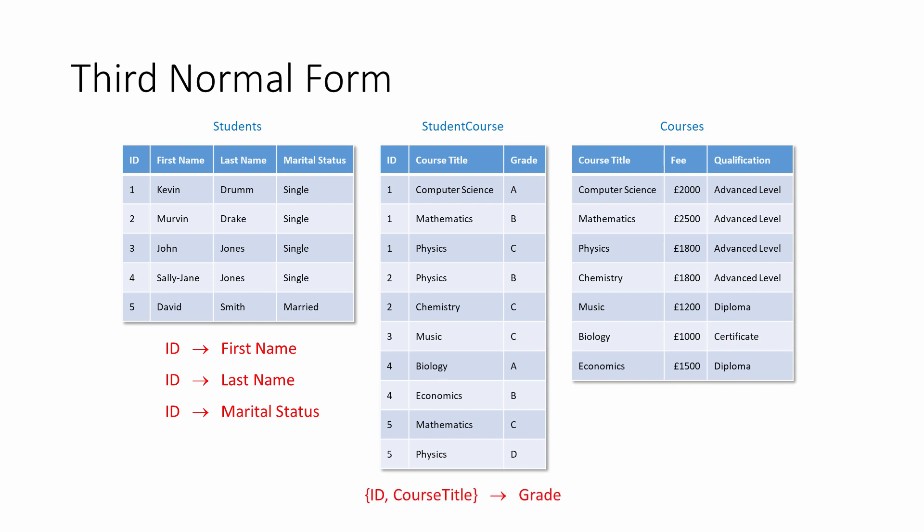The course title in the student course table is also functionally dependent on the composite primary key. But because the course title is a subset of the composite key, it's known as a trivial functional dependency. It's okay to have functional dependencies in a table for it to be in third normal form — in fact, it's absolutely necessary. Every non-key attribute of a table must be fully functionally dependent on the primary key. If it was partially dependent, the table wouldn't even be in second normal form.